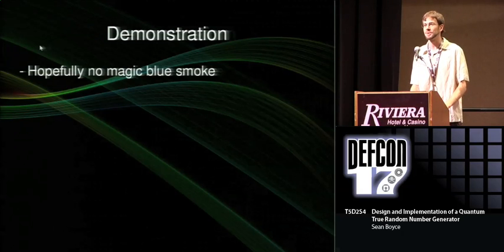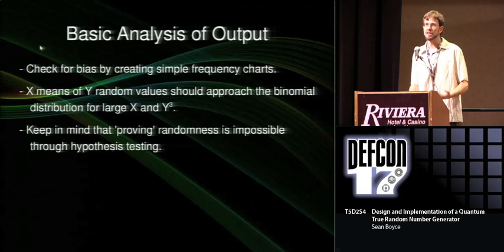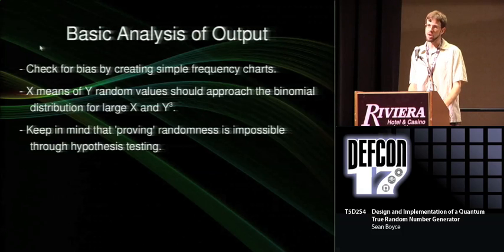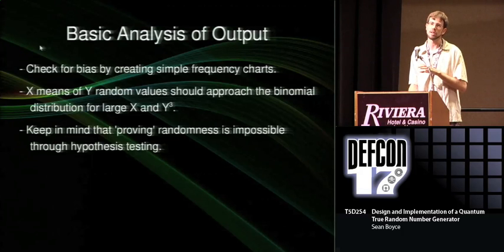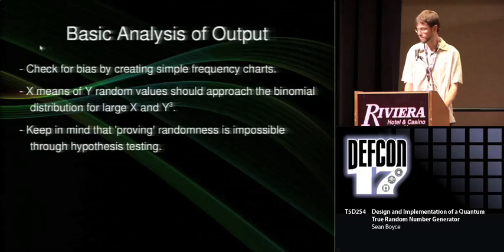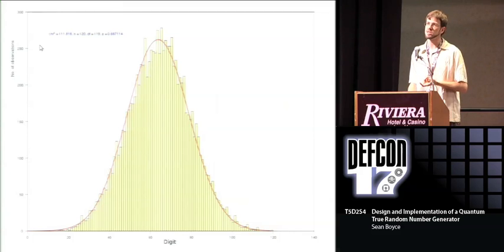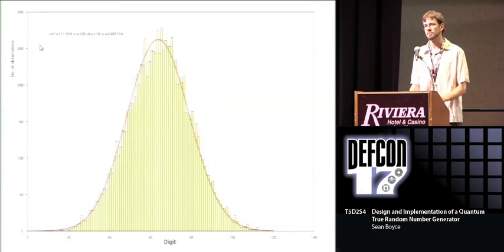The demonstration won't be happening because the microcontroller died on its journey here. However, if you'd like to play with the detector later, that will be possible. Once you have output, you need to analyze it — otherwise you might find out that it's meaningless. You start by creating basic frequency charts to make sure you have no missing numbers, and you can also try to recreate the binomial distribution by plotting the frequency of averages of sets of numbers. Keep in mind that proving randomness is impossible using traditional hypothesis testing statistics — what you're really doing is looking for problems you expect to have and fixing them if they come up. This is a frequency chart for the first 60,000 random numbers, and we didn't see anything unexpected. I then took 10,000 means of six digits and graphed them, and we get approximately the binomial distribution.